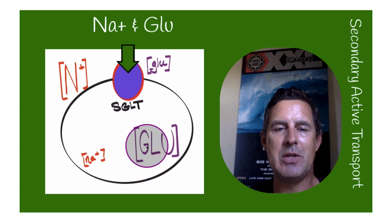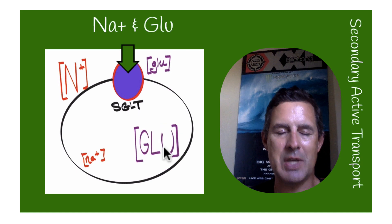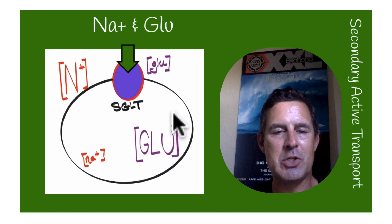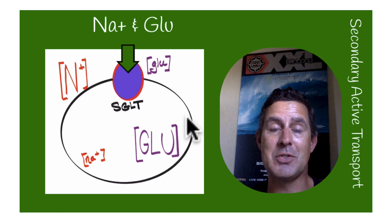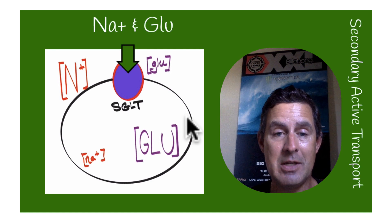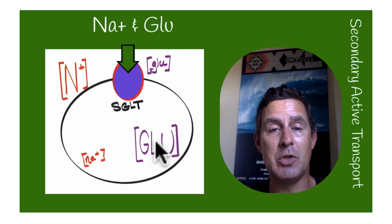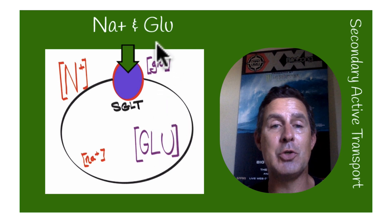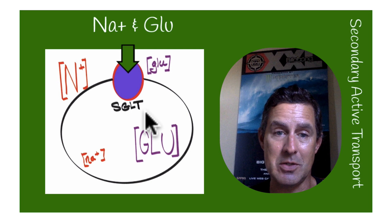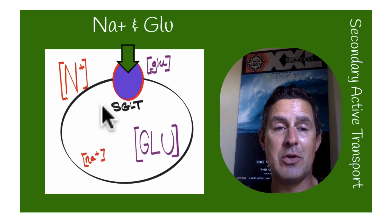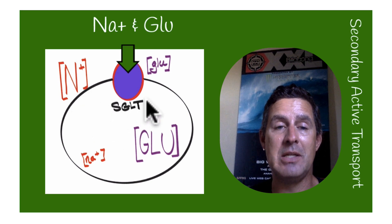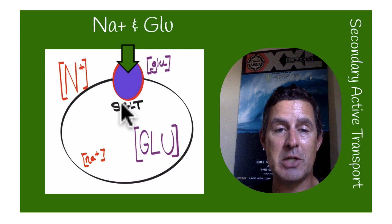In the sodium-glucose transporter, it's pulling glucose into the cell against its gradient. There is a super high concentration of glucose inside the cell. Full disclosure, this is not the case with all body cells, but certain cells like cells in the kidney — specifically of the nephron — have a high concentration of glucose. Glucose needs to be pulled into those cells, and that's achieved by the kinetic energy of the sodium-glucose transporter.